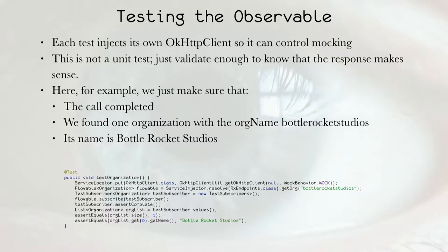So then each test is going to inject its own HTTP client. This way, each test can control how it's mocked. And again, we're not writing unit tests. Our goal isn't to generate exhaustive coverage. Our goal is to make sure that the call completed, to make sure that the call returned something that is like what we expected. So here we're getting the Bottle Rocket Studios organization. We are asserting that the call completed. We're asserting that we got one result. We're asserting that the name of the result we got is Bottle Rocket Studios.